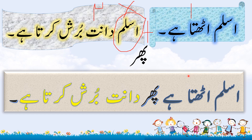اسلم اٹھتا ہے — یہ ہمارا پہلا جملہ ہے۔ دانت برش کرتا ہے — یہ ہمارا دوسرا جملہ ہے، جس سے ہم نے لفظ اسلم نکالا۔ لیکن بچوں کون دانت برش کرتا ہے؟ ہاں اسلم ہی دانت برش کرتا ہے۔ اسلم اٹھتا ہے، فر دانت برش کرتا ہے۔